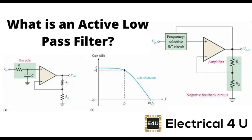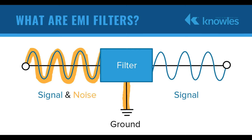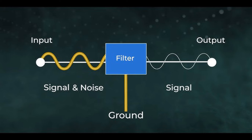2. High-Pass Filter — allows high-frequency signals to pass while attenuating low-frequency signals. Applications include blocking low-frequency noise like hum from power lines in audio systems, enhancing high-frequency components in audio processing, and removing DC offsets from signals. 3. Band-Pass Filter — allows a specific range of frequencies (a band) to pass while attenuating frequencies outside this range. Applications include radio communication, medical devices like ECGs to capture relevant biosignals, and audio equalizers to isolate frequency ranges.